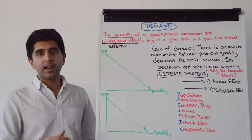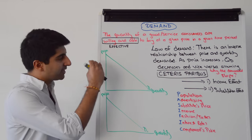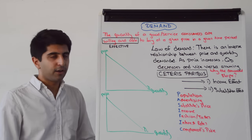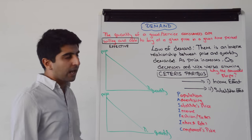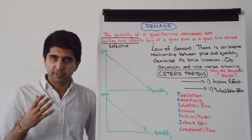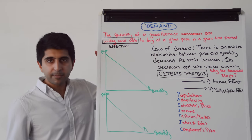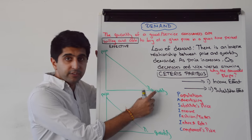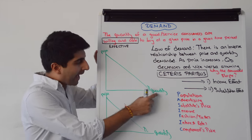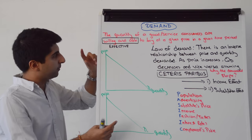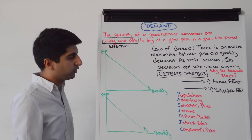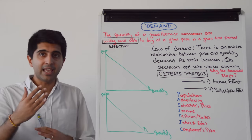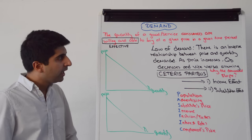We can show that relationship on a diagram using a demand curve. Whenever we draw these curves — we say curves, but they are linear downward sloping lines for simplicity — we must label the axes correctly. We're showing the relationship between price and quantity demanded, so price goes on the y-axis and quantity on the x-axis. Our demand curve is therefore downward sloping because that shows the inverse relationship.